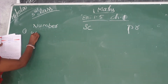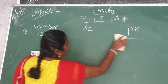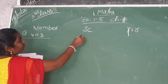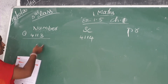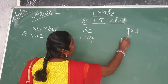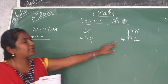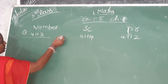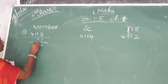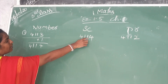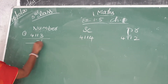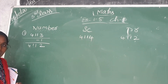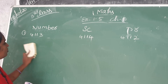First number is 4113. Successor means after number — 4113's successor is 4114. Predecessor means just before number. 4113 minus 1: 3 minus 1 is 2, 1 stays, 1 stays, 4 stays — so the predecessor is 4112. Write the successor and predecessor like this. After number is the successor, before number is the predecessor.